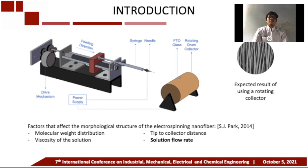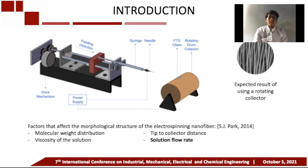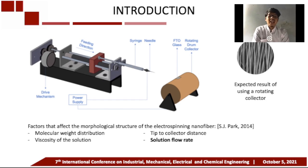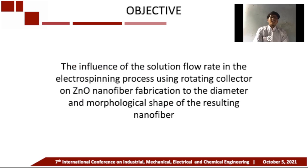Among the factors that influence the electrospinning process, the solution flow rate is known to have a major influence on the formation of fibers in the collector and affects the diameter of the semiconductor morphology produced. The use of a rotating collector in the electrospinning process will also provide better uniformity of the resulting nanofibers compared with a fixed collector, as it will avoid uneven solution evaporation in the electrospinning process.